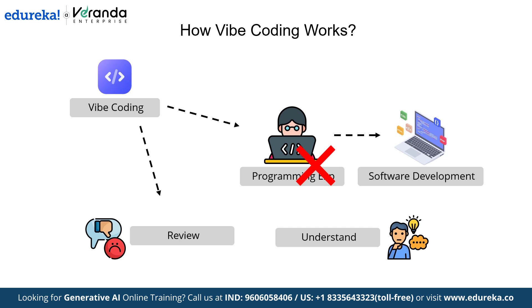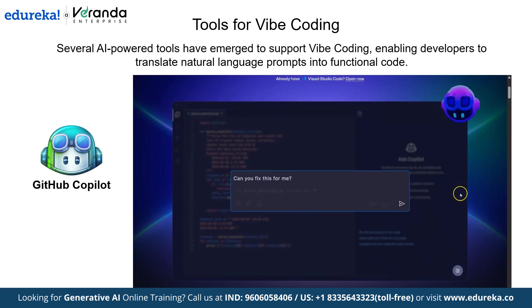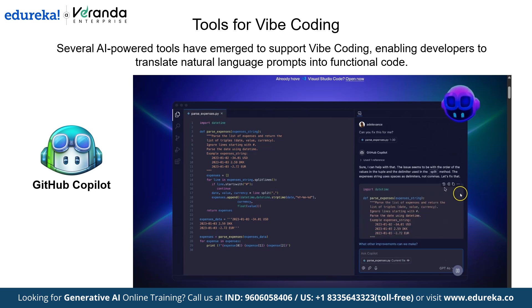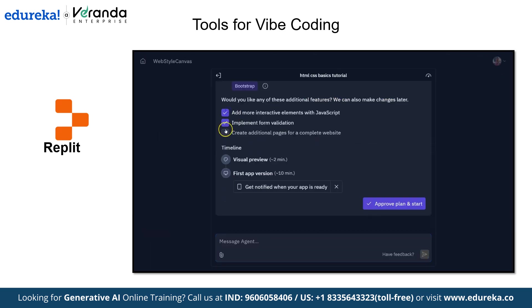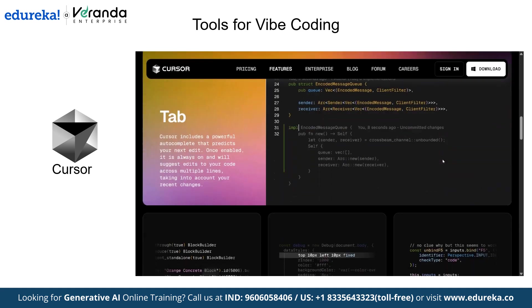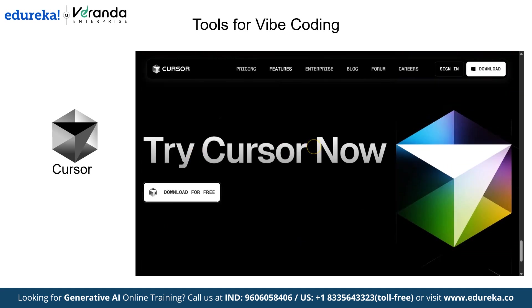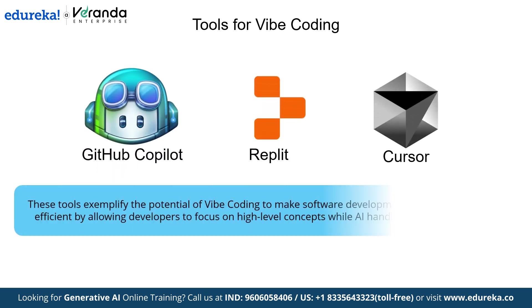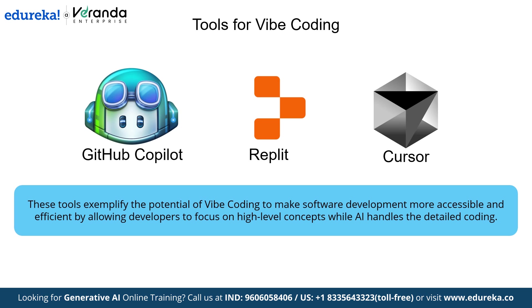Now that we've explored how Vibe Coding operates, let's examine some of the leading tools that facilitate it. Several AI-powered tools have emerged to support Vibe Coding. The first is GitHub Copilot, developed by GitHub in collaboration with OpenAI, which integrates with popular code editors to provide real-time code suggestions based on natural language descriptions. The second is Replit, an online coding platform that offers AI-assisted development features, allowing users to build and deploy applications directly in their browsers. The third is Cursor, a code editor designed for AI-assisted development, featuring real-time code suggestions and natural language processing capabilities. These tools unlock the potential of Vibe Coding, making software development more accessible and efficient.